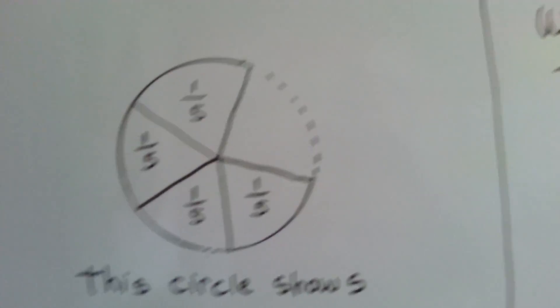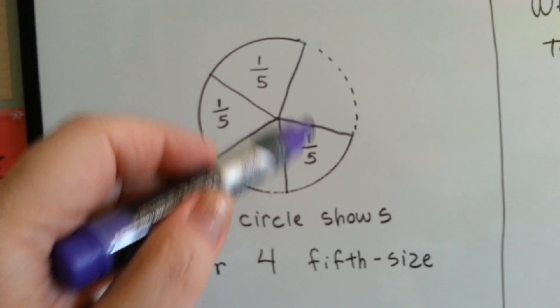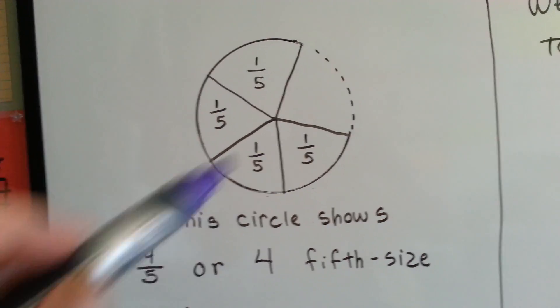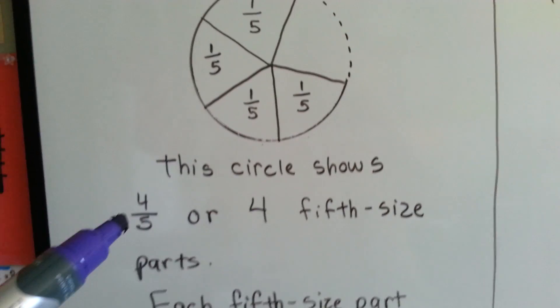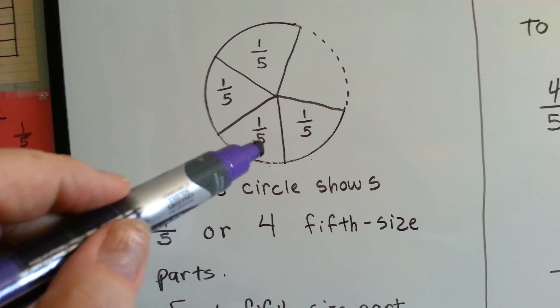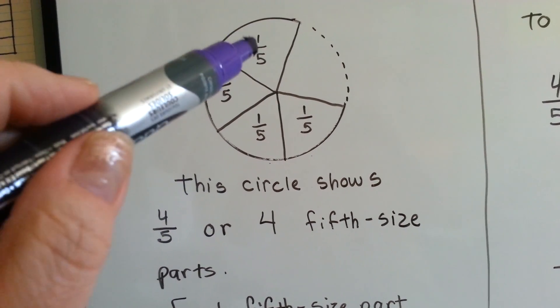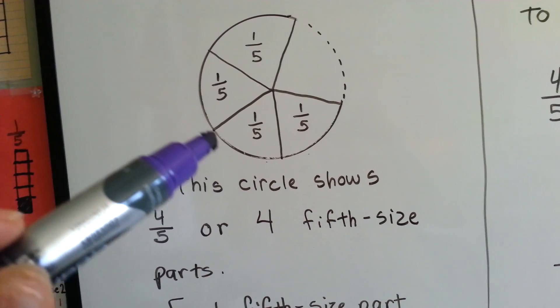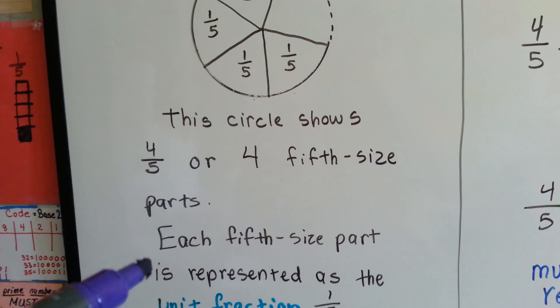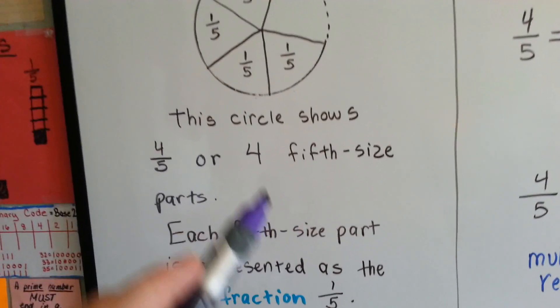Alright, so let's take a look at this circle. We have a circle that was broken into fifths, but one of them is missing. We've got 1, 2, 3, 4 of them. It shows 4 fifths. There are 4, 1, 2, 3, 4, 5th size parts. Each 5th size part is represented as the unit fraction 1 fifth.